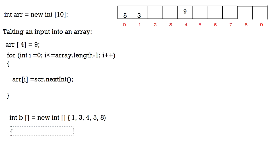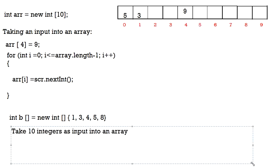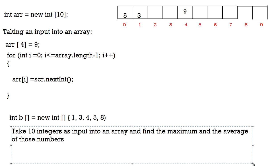Let's solve a problem. We're going to take 10 numbers as input and find the maximum and the average of those numbers. So: take 10 integers as input into an array and find the maximum and the average.